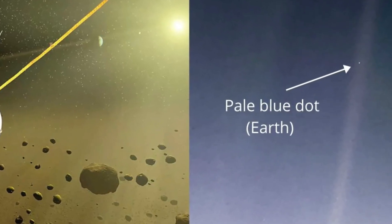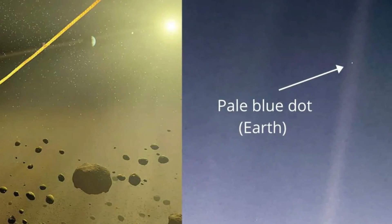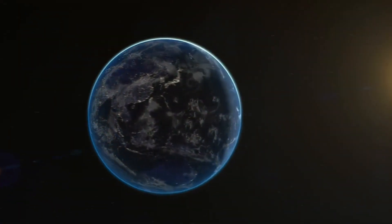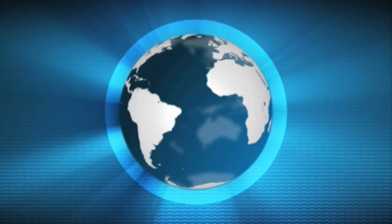It was taken when Earth was about 3.7 billion miles away, and in the photo, our planet looked like this tiny, faint speck floating in the vastness of space. It's pretty mind-blowing.